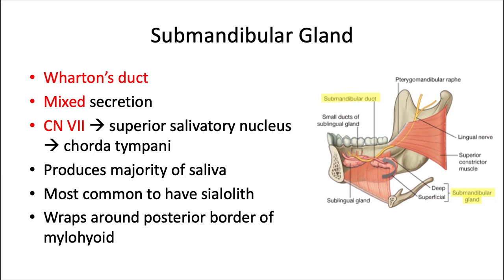Next we have the submandibular gland. The submandibular duct is called Wharton's duct — another important name to know. This one opens directly onto the floor of the mouth at the sublingual caruncles, located on either side of the lingual frenum in the anterior floor of the mouth. The submandibular duct travels along the floor of the mouth for a while and crosses superior to the lingual nerve of V3, which could appear in an anatomical-based exam question. The duct empties onto the sublingual caruncle.